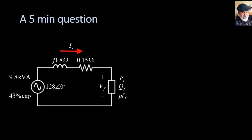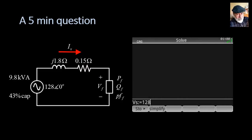Let's find Ix then. Let me do that on the calculator. Vs is 128 with zero degrees, a real number. The complex power at the source is 9,800 volt-amperes with an angle of negative—negative because it's capacitive, arc cosine of 0.43.